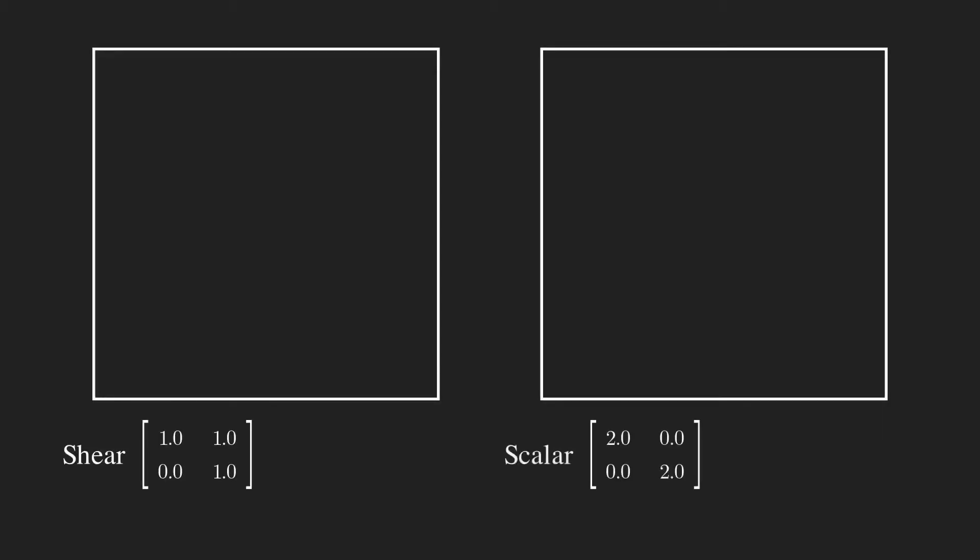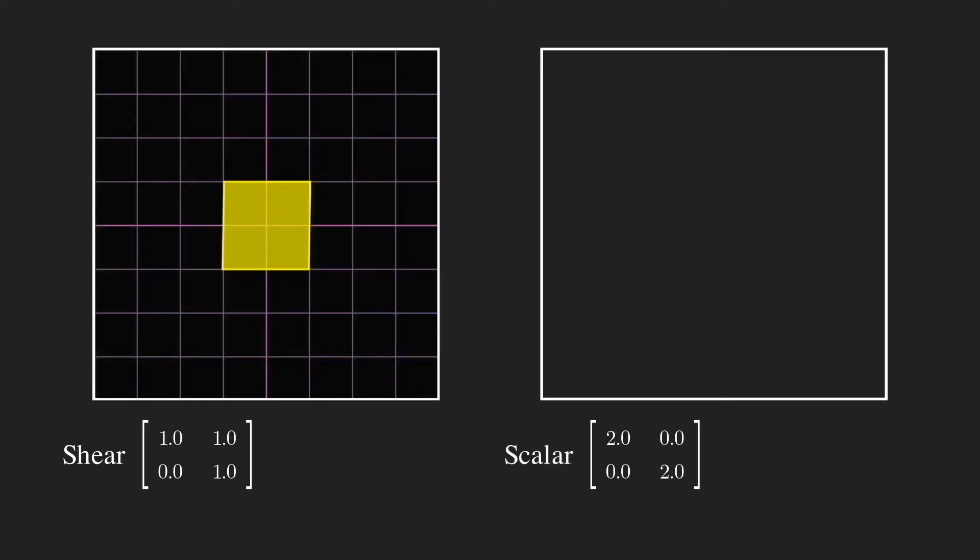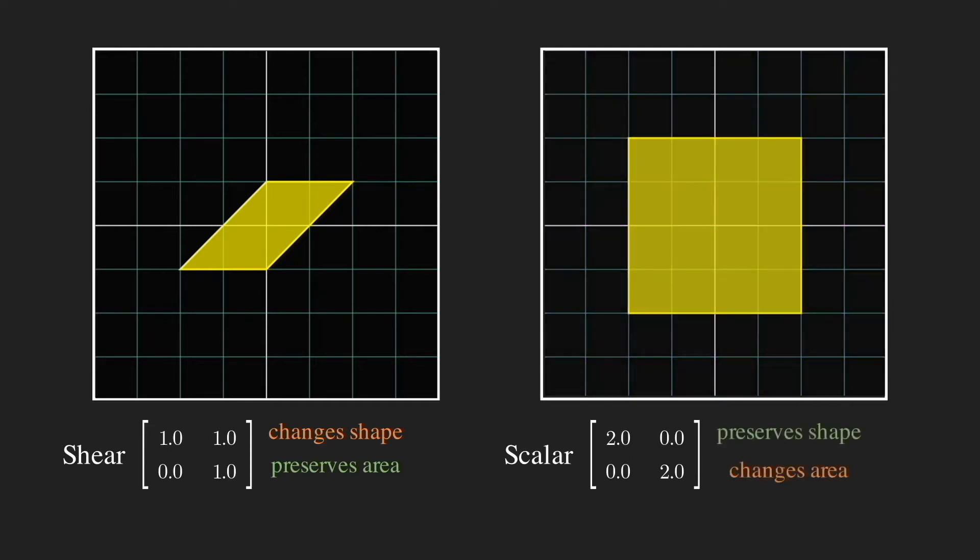It's also notable to mention a property shear matrices have, which the transformation preserved the area of the object despite changing the shape, which forms a distinction with the scalar matrix from earlier, which preserved the shape but changes the area.